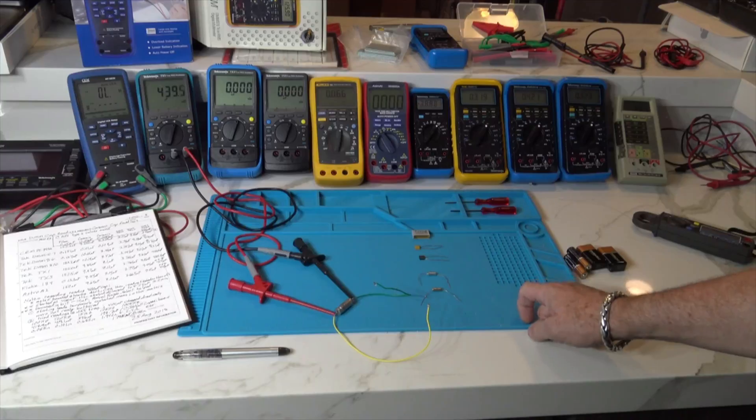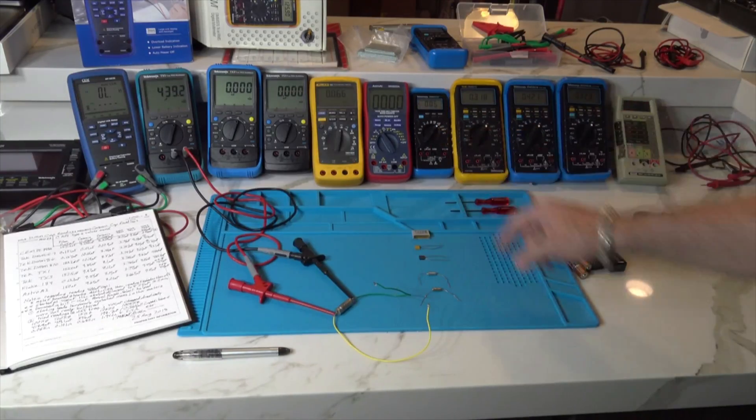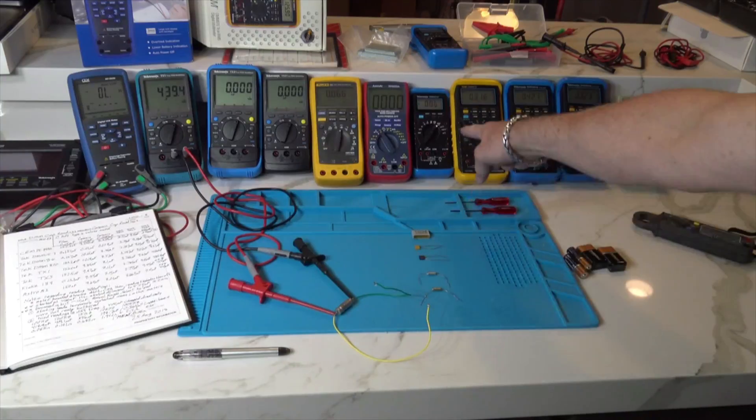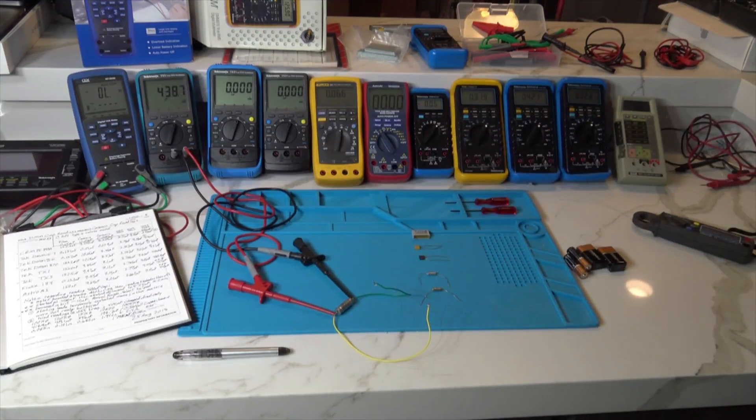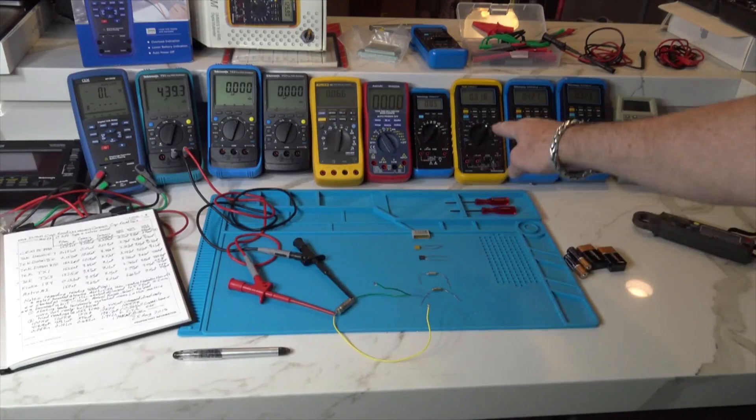He actually has four ranges, and he has three ranges of current. So I thought he might be a little bit more accurate reading capacitance and current. So that's why I got him, plus he was inexpensive, like 75 bucks.